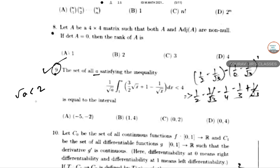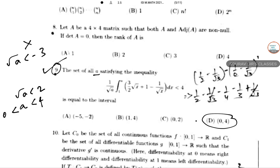Since √A cannot be less than -3 (as it's a real non-negative number), that factor is always positive. So we need √A < 2, meaning A < 4. Since A must be positive (under square root), A lies between 0 and 4. The final answer is D.